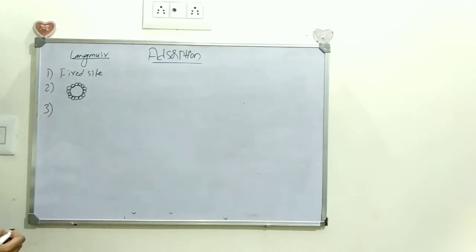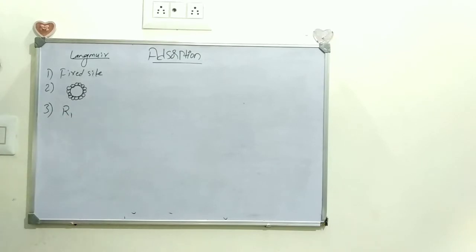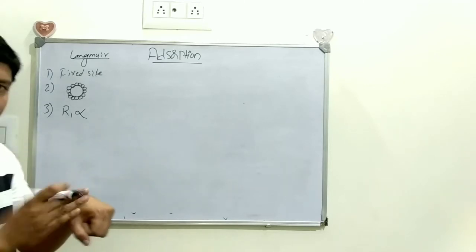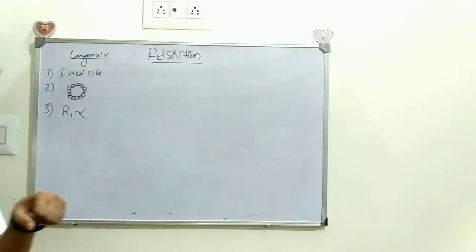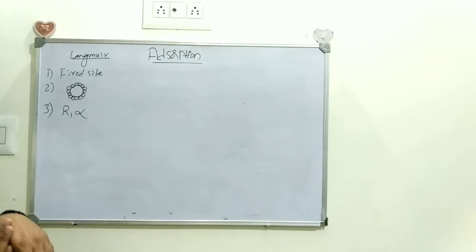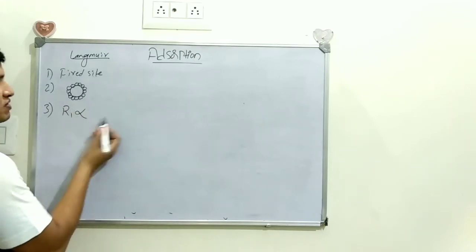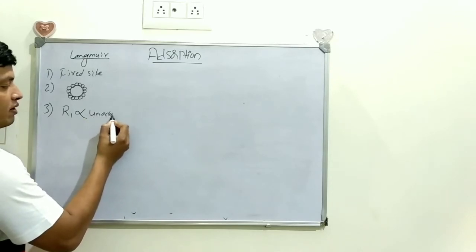The third assumption: rate of adsorption, let's say R1. Rate of adsorption is directly proportional to the number of sites unoccupied, because for the gas molecule to get adsorbed, there should be some empty spaces, and then only the molecule will get adsorbed on the adsorbing species.